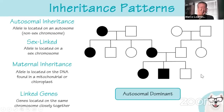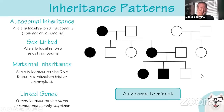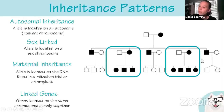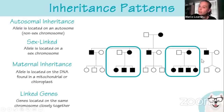Autosomal dominant appears in every single generation, with equal probabilities between males and females. If all offspring come from an affected female are affected regardless of the father, but affected males don't pass it on, that tells us it's mitochondrial or maternal inheritance. It could be chloroplast if we're looking at a plant.